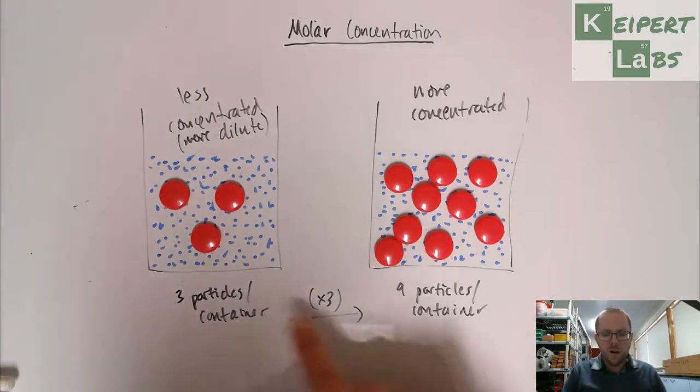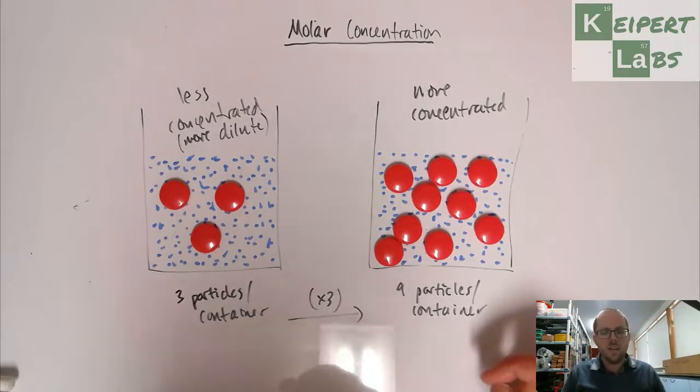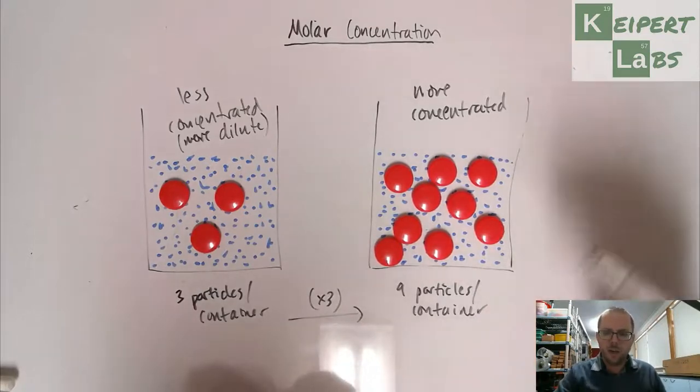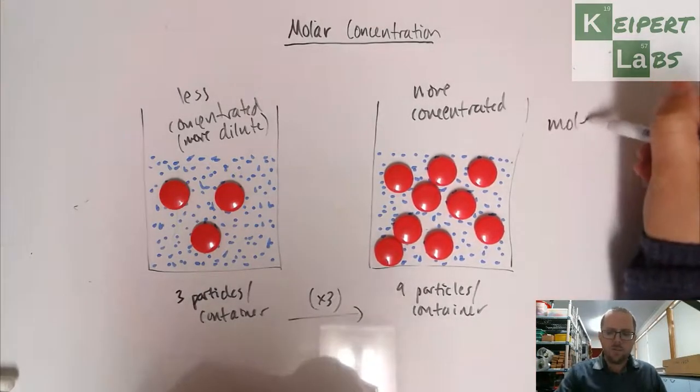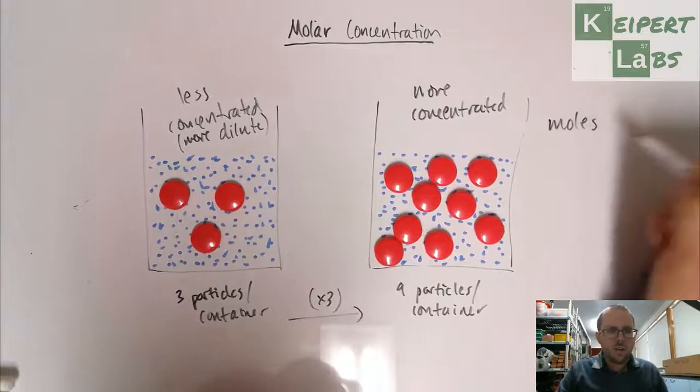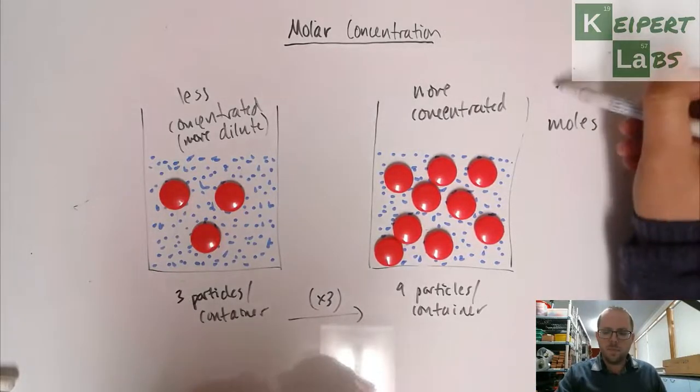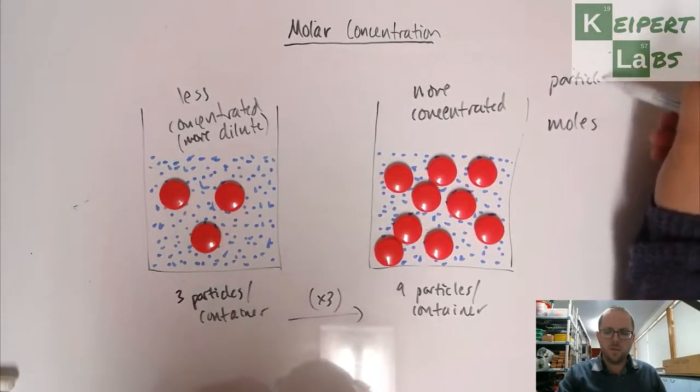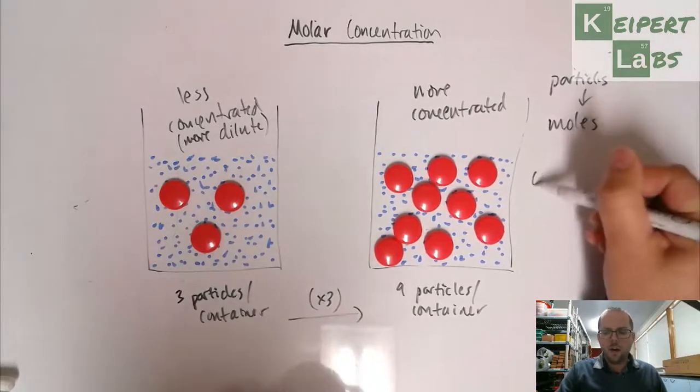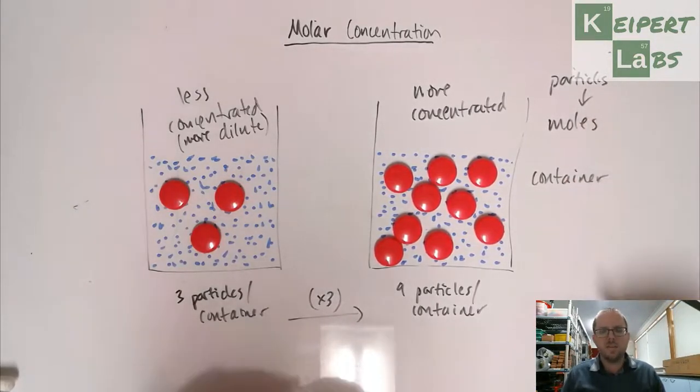So now what we know is that we have a standard number of particles that we talk about in chemistry, and that is we talk about the mole. So we can use the concept, so particles, we can start to talk about moles. And then rather than a container, where it's like how big is the container, how small, how much water is it, is it a test tube, is it a big beaker, is it a bucket, is it an ocean?